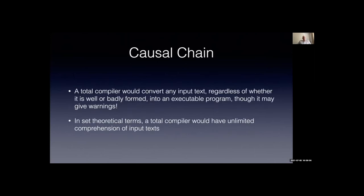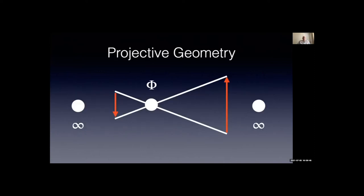What is totality? A total compiler would convert any input text, regardless of whether it's well or badly formed, into an executable program — giving warnings if the text is rubbish. There shouldn't be any input text which is illegal in a total system; we should be prepared to compile anything. In set-theoretical terms, that maps onto unlimited comprehension: any sentence at all will define a set.